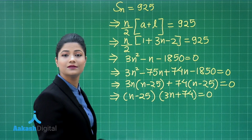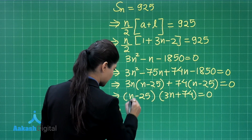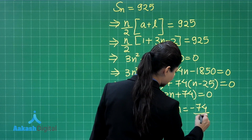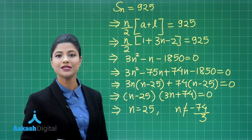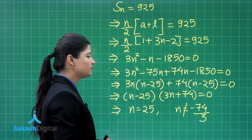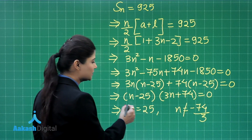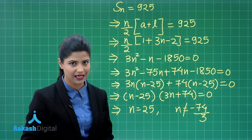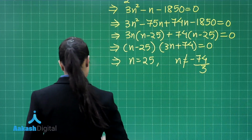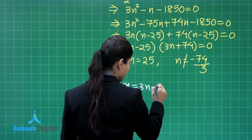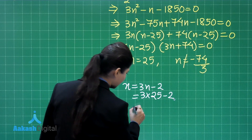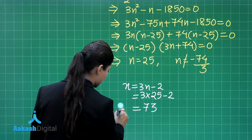Equating each factor to zero: n equals 25, or n equals minus 74 upon 3. The second value is not possible because n represents the number of terms of an AP — it cannot be negative or fractional. So n equals 25. Substituting back, x equals 3n minus 2 equals 3 times 25 minus 2 equals 73.